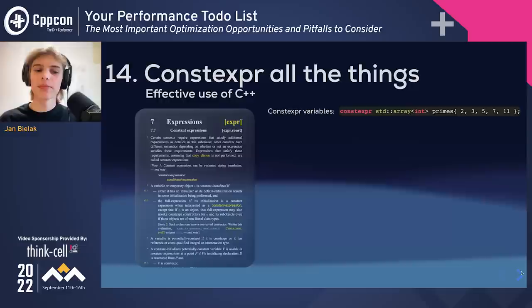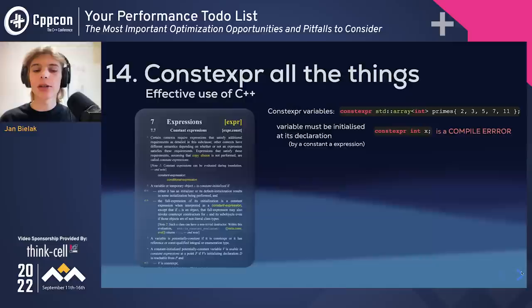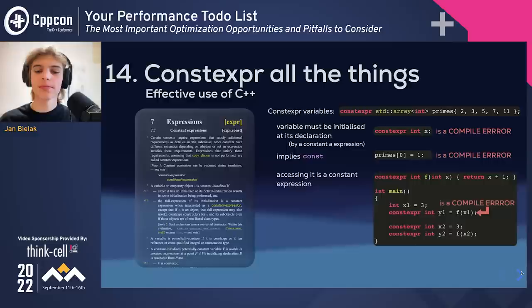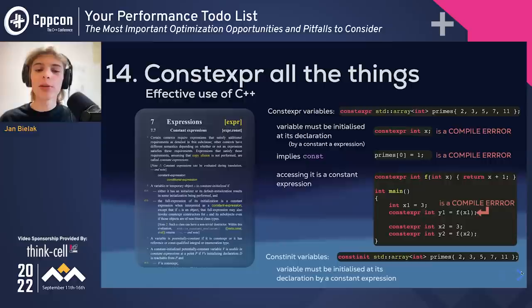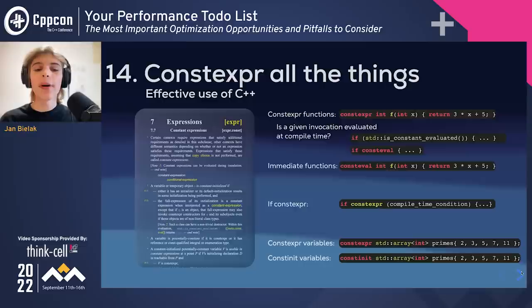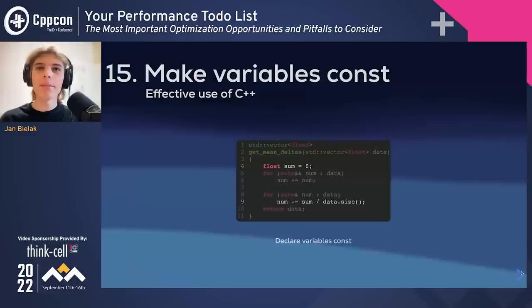Constexpr can also be applied to variables — it requires the variable to be initialized at declaration by a constant expression, implies the variable is const, and makes each use of the variable a constant expression. Alternatively, a variable can be marked constinit, which only requires initialization by a constant expression; it is not const and its value can be modified at runtime. Generally, constexpr, constinit, and consteval are used to force the compiler to perform certain computations at compile-time instead of at runtime.